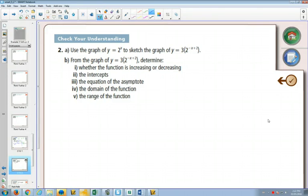So we are now going to graph y equals 3, bracket 2, negative x plus 2. Whoa, that's a bad little bracket. There we go. Can you see the base graph, the parent graph?